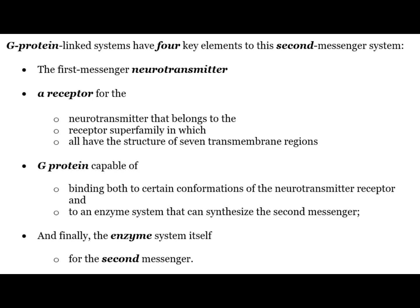The G protein linked system has four key elements. First is the first messenger neurotransmitter itself. Second is a receptor for the neurotransmitter belonging to a superfamily in which all have the structure of seven transmembrane regions. Third is the G protein capable of binding both to certain conformations of the neurotransmitter receptor and to an enzyme system that can synthesize the second messenger. Fourth is the enzyme system itself for the second messenger.